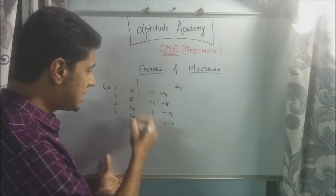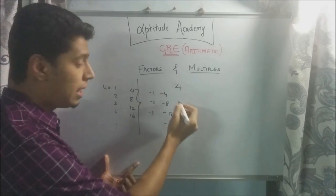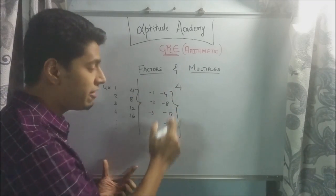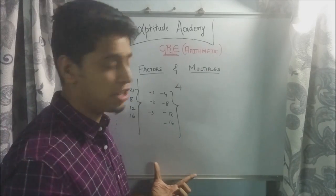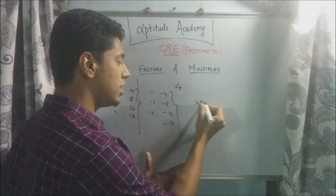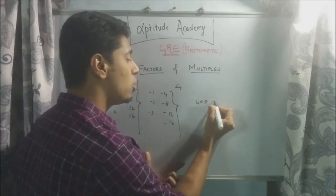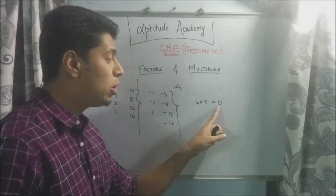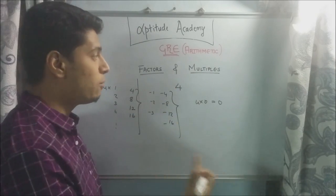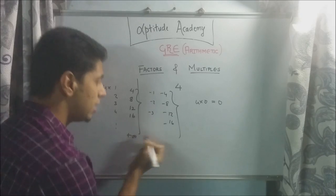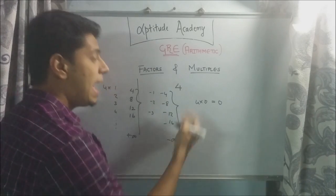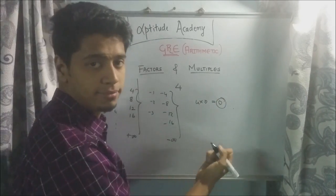So this list is all your positive multiples of 4 and this list is defined as your negative multiples of 4. Don't forget that 0 is also considered an integer. So if you multiply 4 into 0 or anything into 0 basically, you're going to get 0. So 0 will always be a multiple of any number. So if you have to say what are the multiples of 4, you will say it's this list which goes on to plus infinity, this will go on to minus infinity, and your 0. So 0 is a multiple for all integers, but 1 is a multiple only for plus 1 and minus 1.